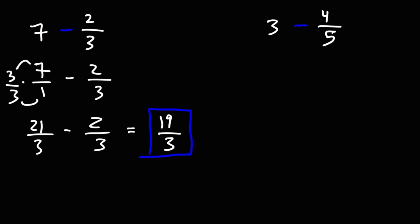Now, let's do the same thing for the second example. So we have 3 minus 4 over 5. So first, we could put this over 1 and then get common denominators.